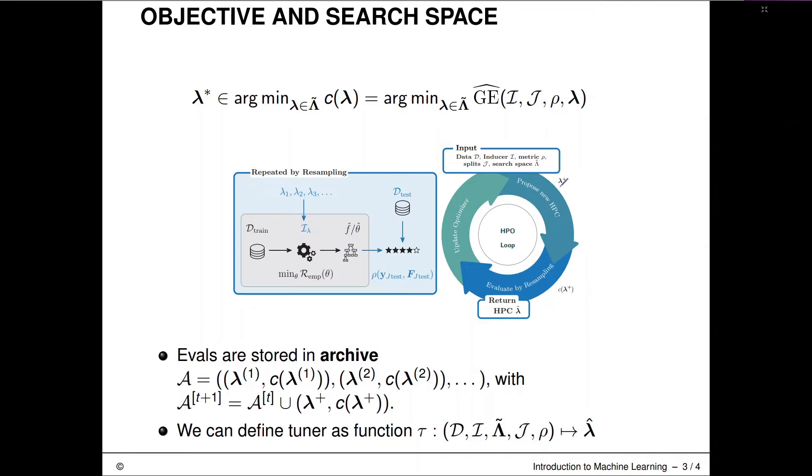Usually this proposal configuration I denote with a Lambda plus. Then we evaluate that by resampling. So we take our data set, we split it up according to this splitting strategy here. So maybe that's a five-fold cross-validation. We cross-validate our learning algorithm. We evaluate its predictions with the performance metric rho here. And the inducing algorithm here is configured by this currently proposed hyperparameter configuration Lambda plus. And after that has happened, we return the result.